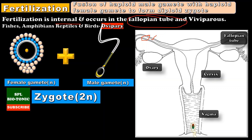Human beings are viviparous, meaning we give birth to young ones. In animals such as fishes, amphibians, reptiles and birds, they lay eggs. They are called oviparous animals. Please make a note of this.